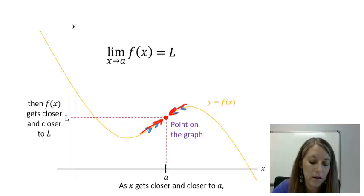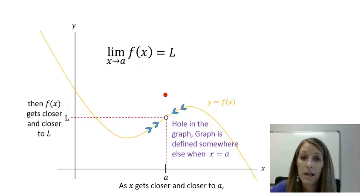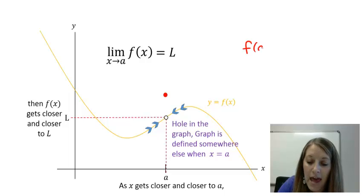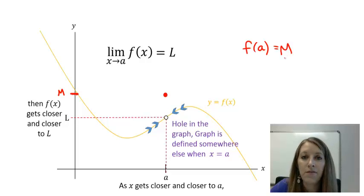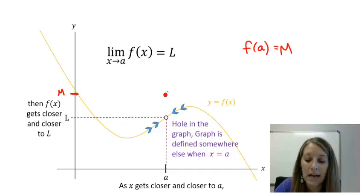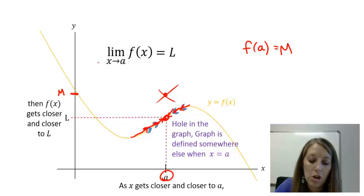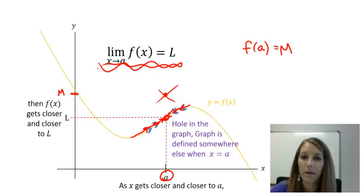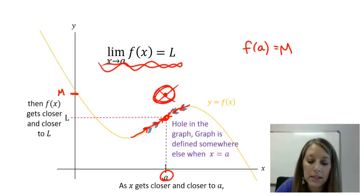We saw an example of a point in the graph, and an example of a hole in the graph. Now let me show you one more example. This graph has a hole, but it also has a point defined somewhere else. The function, f of a, is defined at wherever this point is — so if I give it a y value such as m, then f of a is defined at m. Functions are where that exact point is. Limits are where your graph is headed. This separate point has no impact on what my limit is, because if I trace my graph closer and closer to the a value, my graph gets closer and closer to L. So my limit is L. One more time: limits are what your graph is getting closer and closer to, and functions are where the actual point is defined.